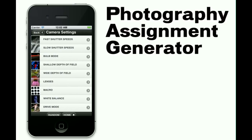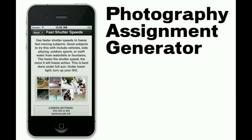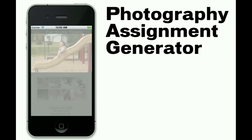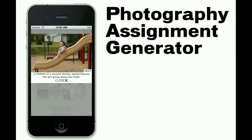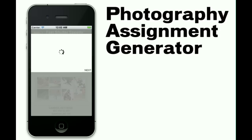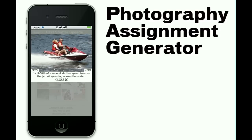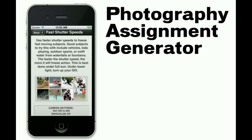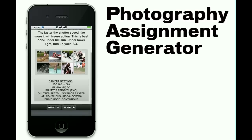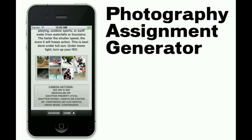In this app you will find over a hundred individual assignments, everything from camera settings, light and flash, the rules of composition, creative techniques, photographing people, landscape and nature, and more. The app contains over 700 example images. Each assignment has a series that will demonstrate the technique or give you inspiration for the assignment. They also include the technical information required to do the assignment, everything from camera settings to lens choice to techniques.